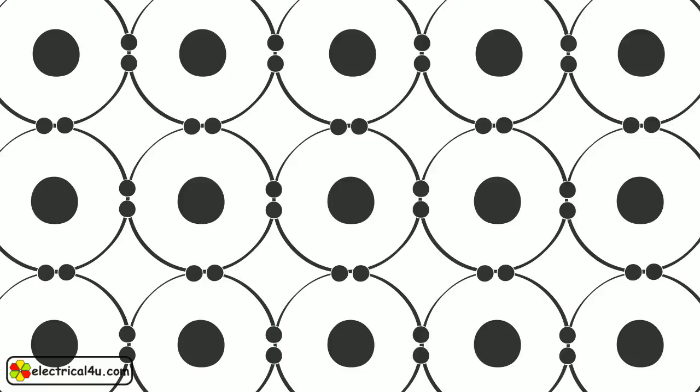At absolute zero temperature there will be no free electrons in the crystal. However, although the electrons are bound to their atoms due to covalent bonding, a rise in temperature breaks some of the covalent bonding and makes some electrons free.